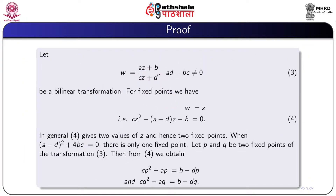Proof: Let W equal to Az plus B by Cz plus D, AD minus BC not equal to 0, be a bilinear transformation. For fixed points we have W equal to Z, that is Cz squared minus (A minus D) times Z minus B equal to 0. In general this equation has two values of Z and hence two fixed points. If the discriminant, that is (A minus D) squared plus 4BC equal to 0, then there is only one fixed point. Let P and Q be two fixed points of the transformation W equal to Az plus B by Cz plus D. Then from equation 4 we obtain CP squared minus AP equal to B minus DP, and CQ squared minus AQ equal to B minus DQ.